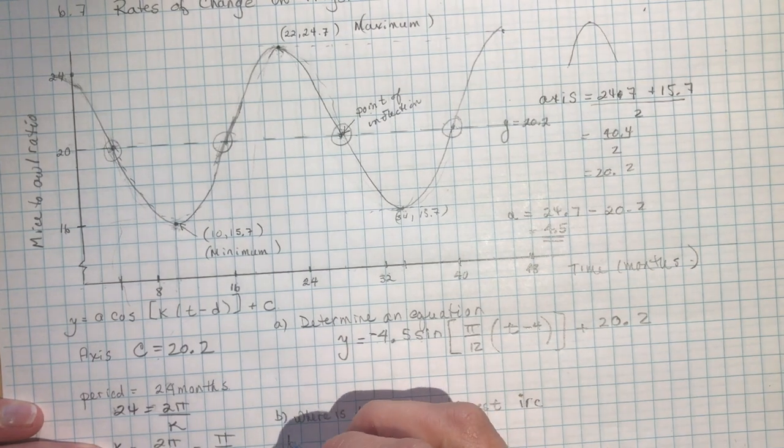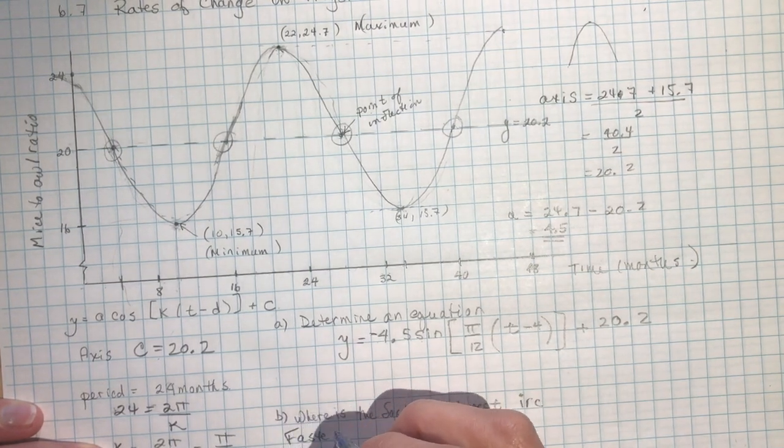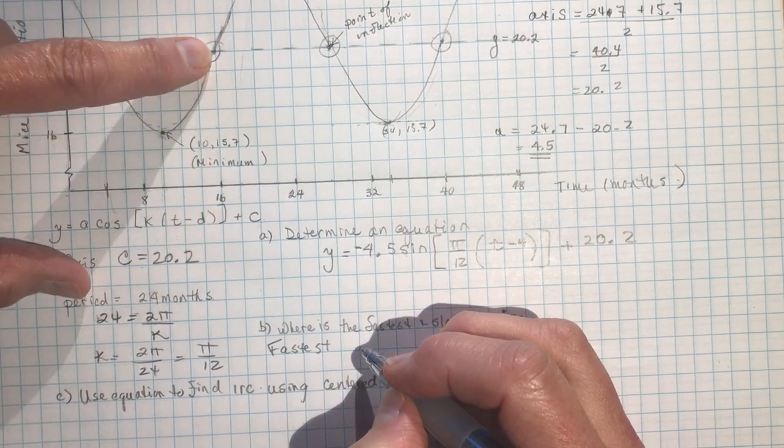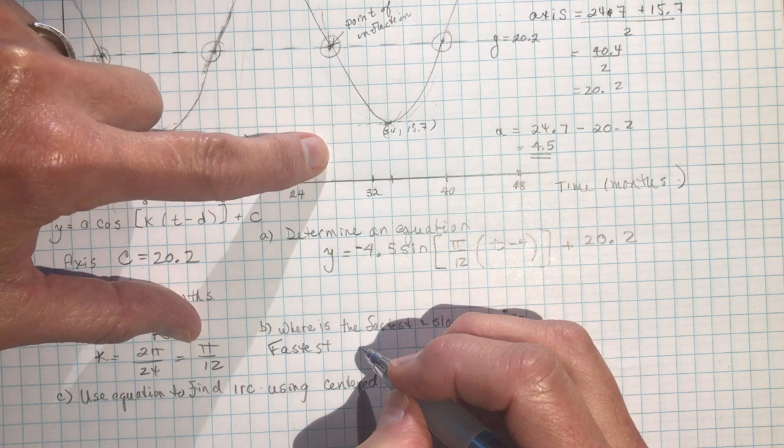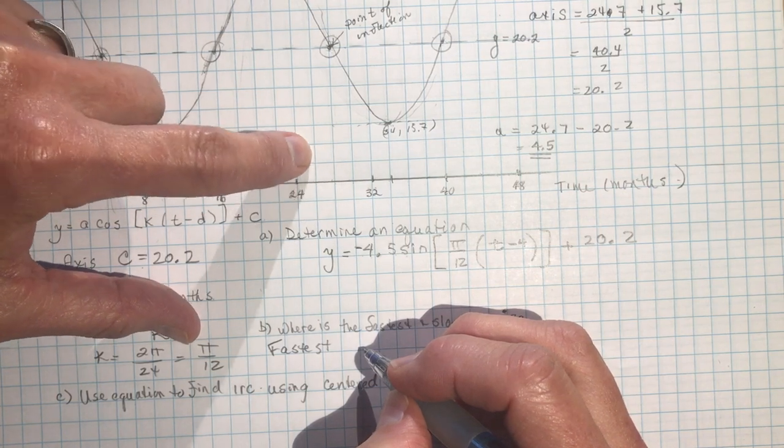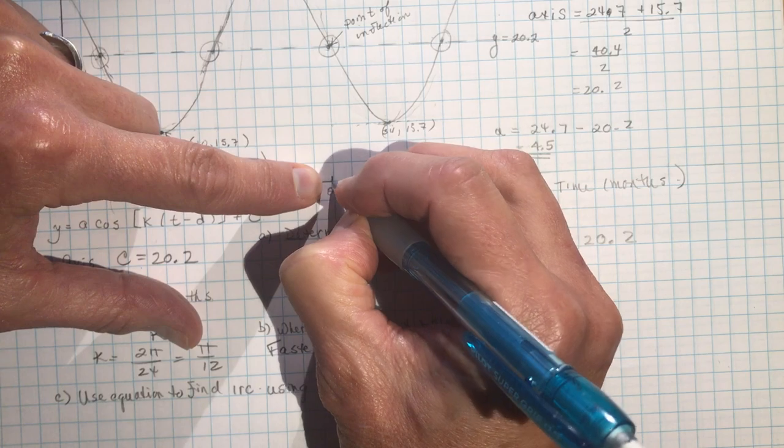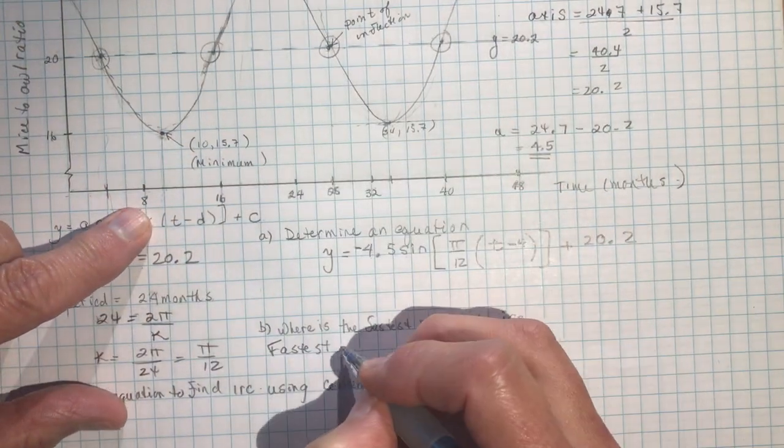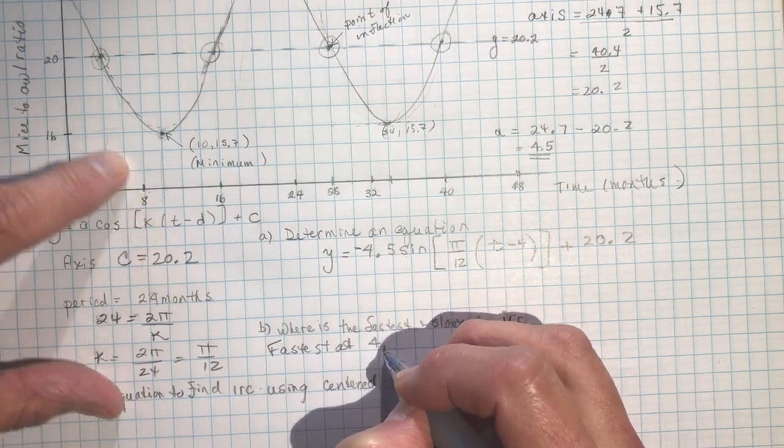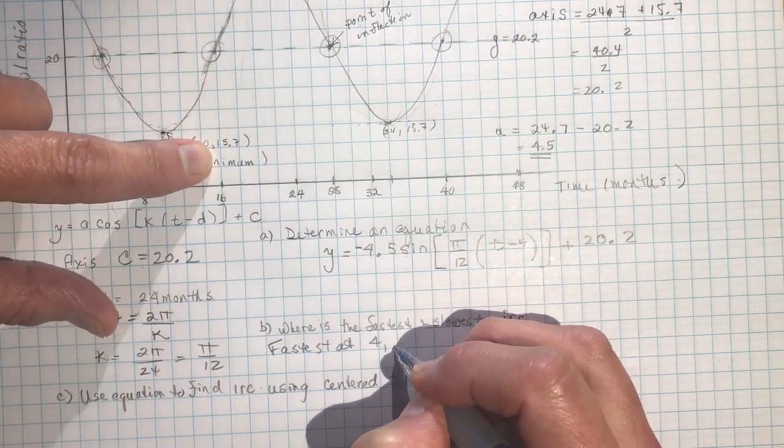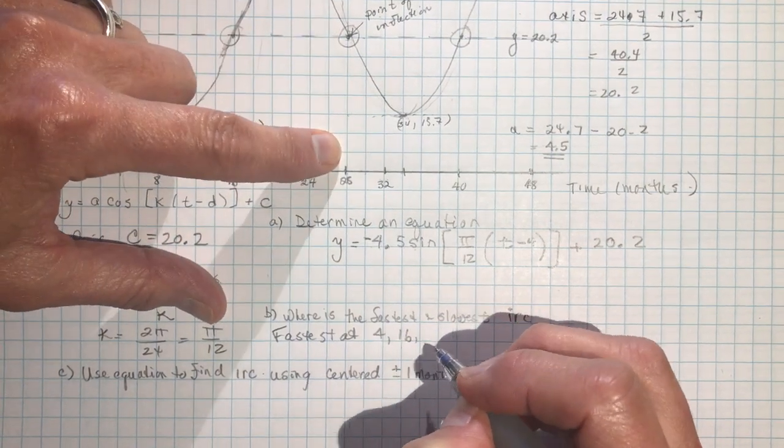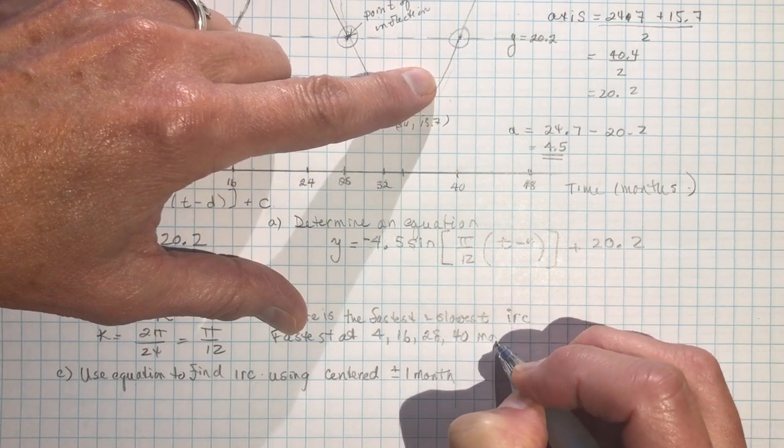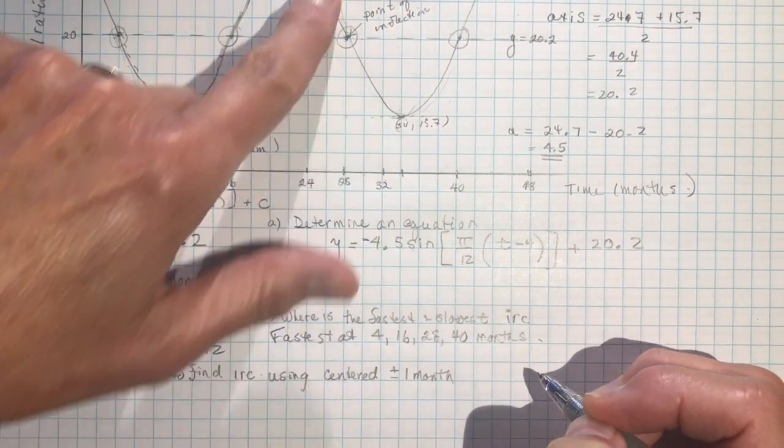So fastest is going to happen at, when we say here, so that's 4, 16, 24, it's 28, it's 28, it's this one, and this one is 40, so 4, at 4, 16, 28, and 40 months, from this graph.